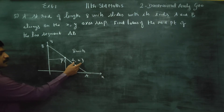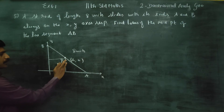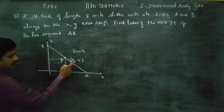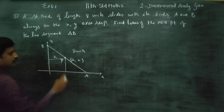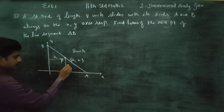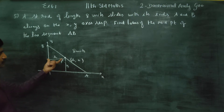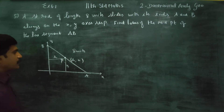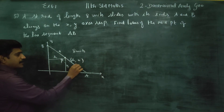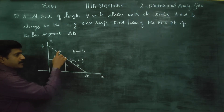The midpoint P is (h, k). H is the x-value and K is the y-value. The total rod is 8 units, so the midpoint is 4 units from each end. This is my h and this is my k.